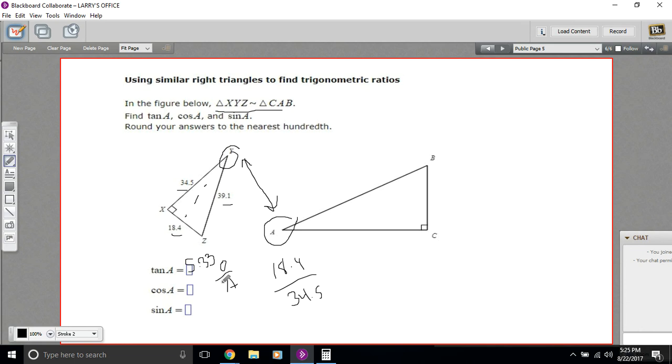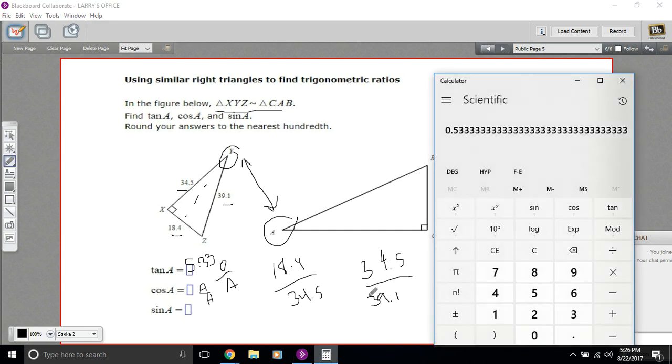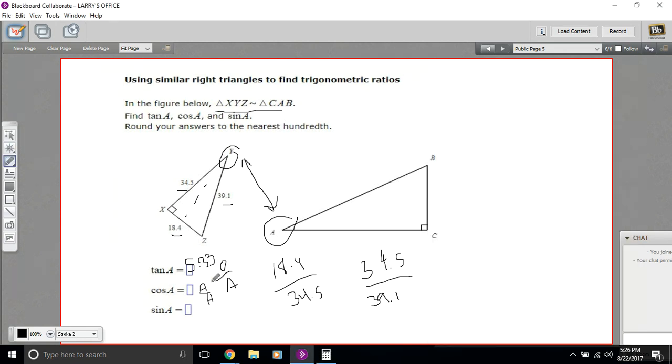All right, let's try the cosine. Same way. We'll look at angle Y here. The cosine is the adjacent over the hypotenuse. So the adjacent angle here is 34.5. And the hypotenuse is 39.1. So let me grab the calculator again. So 34.5 divided by 39.1. And we get 0.88. So this one is, I'll put the answer over here, 0.88.